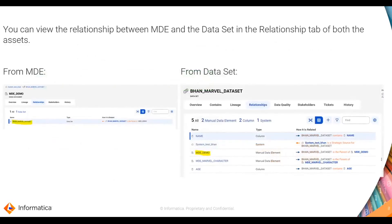You can view the relationship between the manual data element and the data set in the relationship tab of both assets. The left screenshot shows the relationship tab from the manual data element, where the relationship type is 'parent of.' The right side screenshot is from the data set where you can see the relationship of the manual data element.